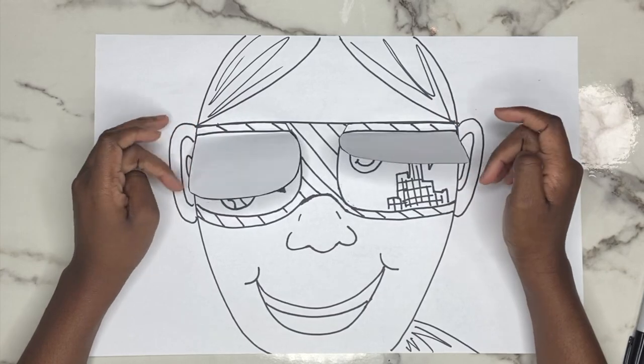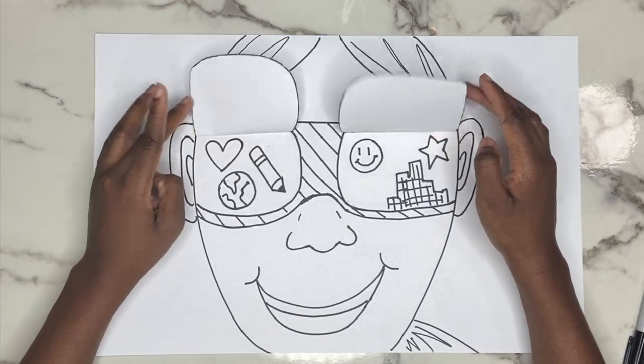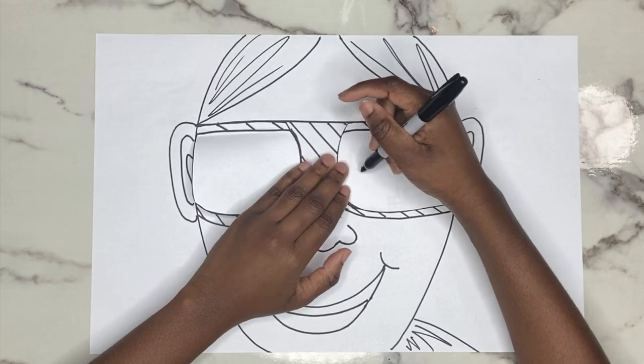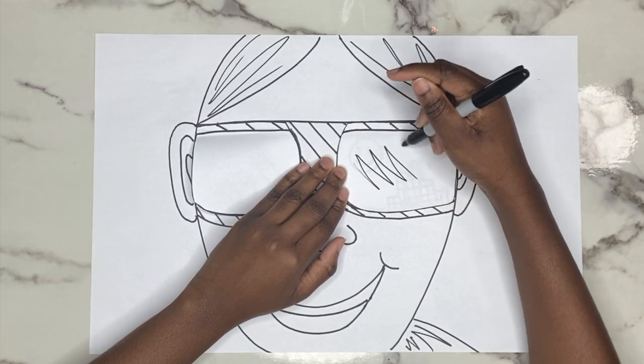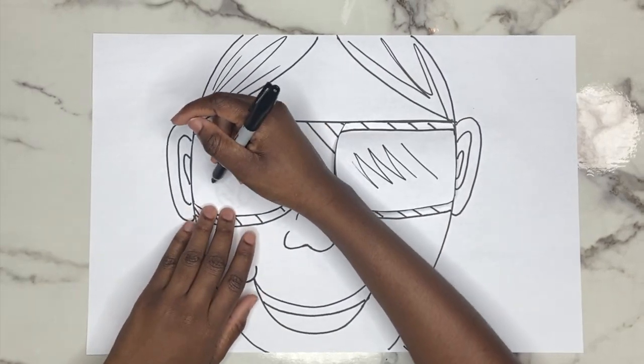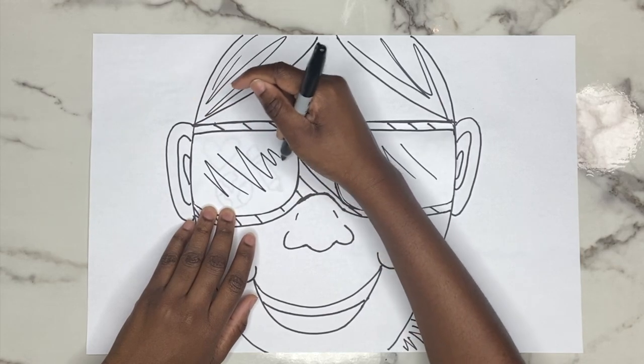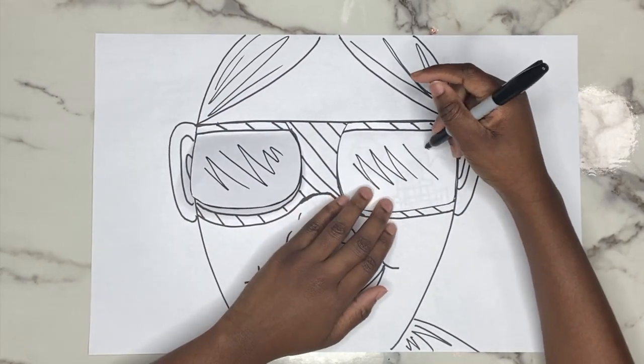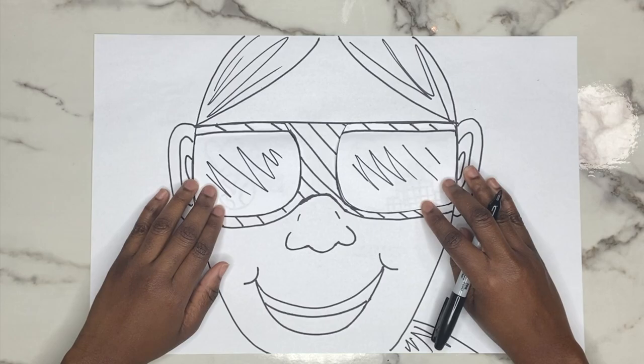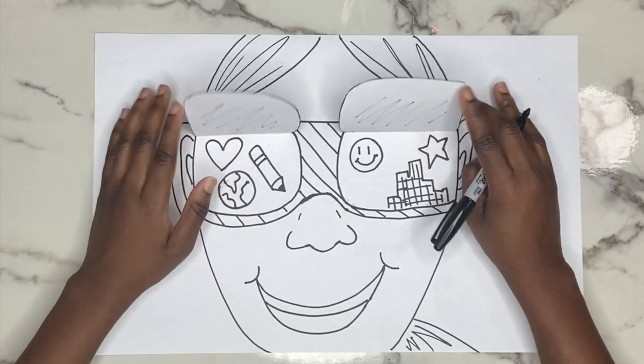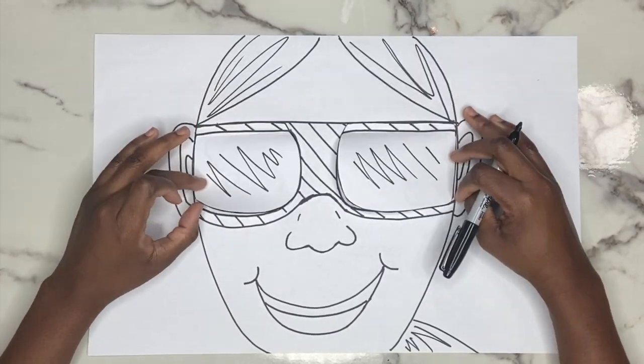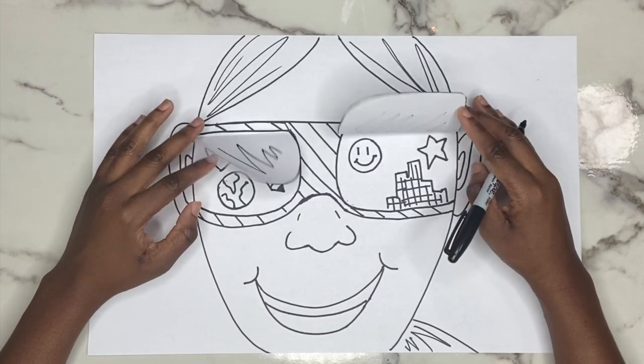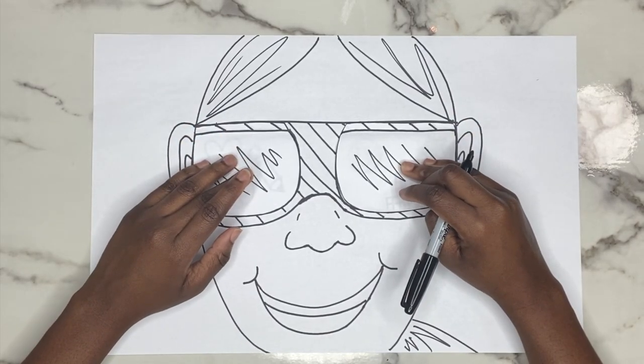One thing I'm going to do right here is I'm going to make this have the little reflection that you see on a lot of glasses. There you go. Now pop open, isn't this so cool? Right friends, I love it. Now it's time to color.